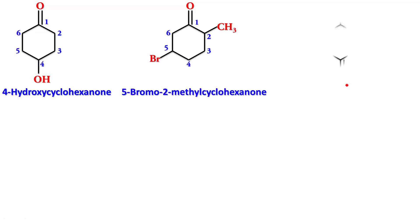Try this one. Both are carbonyl carbons, so either of them can be taken as 1 and the other automatically becomes 4. Numbering 1, 2, 3, 4, 5, 6 — it's cyclohexane-1,4-dione.